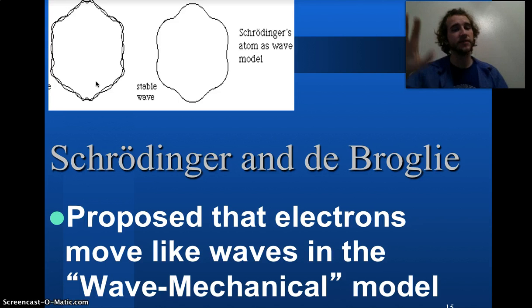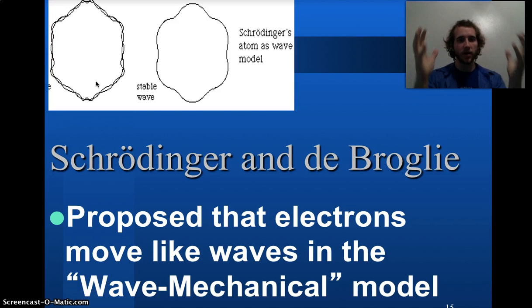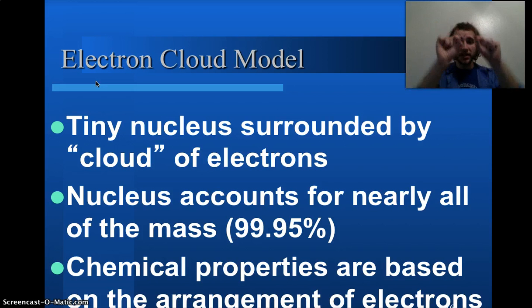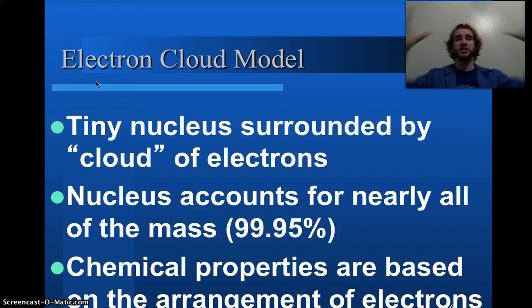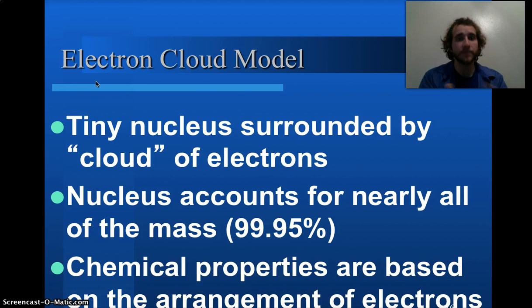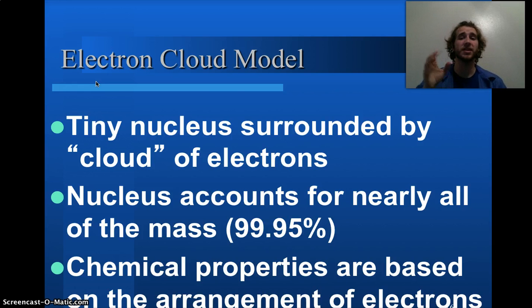And this is the area they like to spend most of their time. I propose this idea, the wave mechanical model, and we sometimes give it a slightly different name. Now, remember, if I'm going too fast, feel free to pause, rewind, review as many times as you'd like. Schrödinger and de Broglie have this idea. We're going to put these electrons in this kind of cloud or this energy wave, this wave area around our nucleus. And we sometimes call it the electron cloud model.